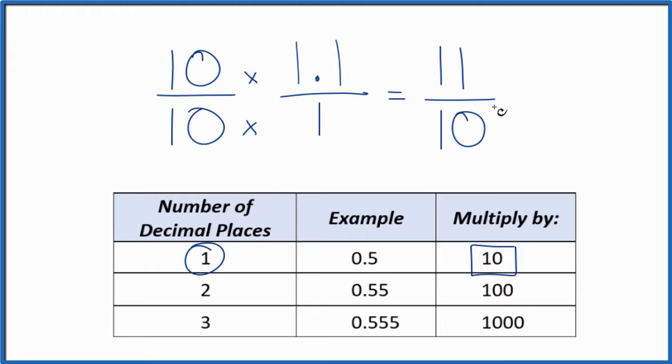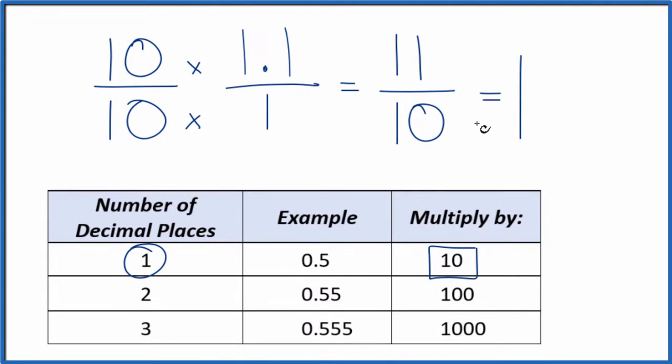This is an improper fraction. The numerator is bigger than the denominator. Let's change this to a mixed fraction. 10 goes into 11 one time with one left over. So we'll call that 1 tenth. So 11 over 10, that's equal to 1 and 1 tenth.